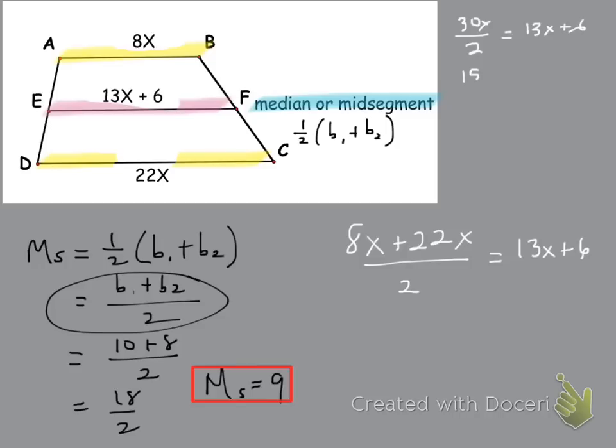You actually can solve this two ways. The quick, easy way is to add 8x and 22x and get 30x over 2 is equal to 13x plus 6, and then you end up with 15x is equal to 13x plus 6. Subtract 13x from both sides, you get 2x is equal to 6, or you get x is equal to 3.